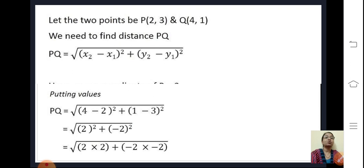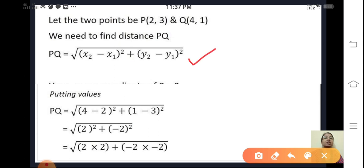consider it as x2, y2. So distance PQ is given by the formula square root of (x2 minus x1) the whole square plus (y2 minus y1) the whole square.